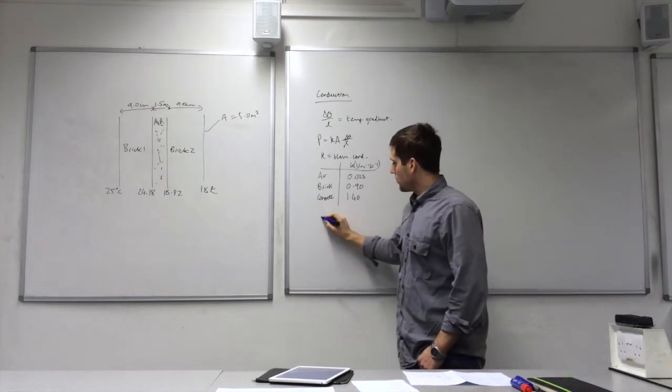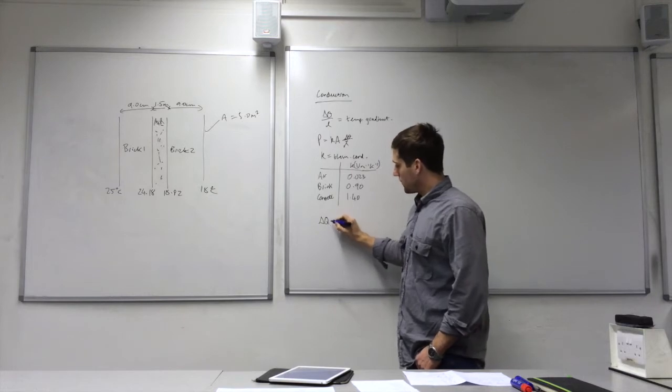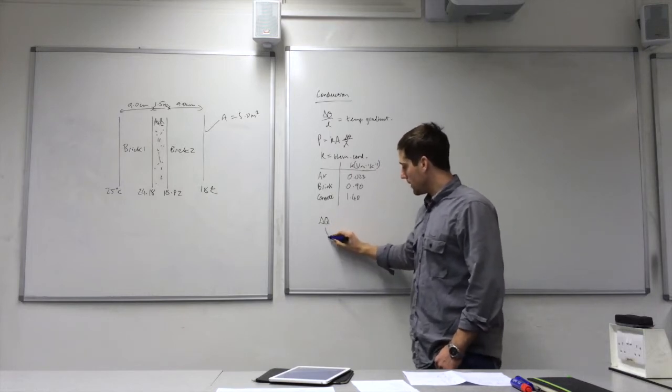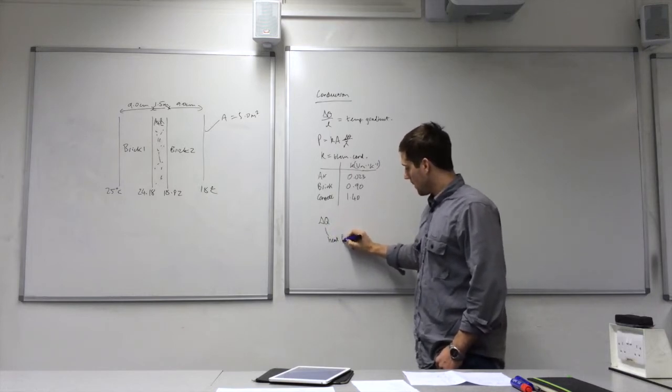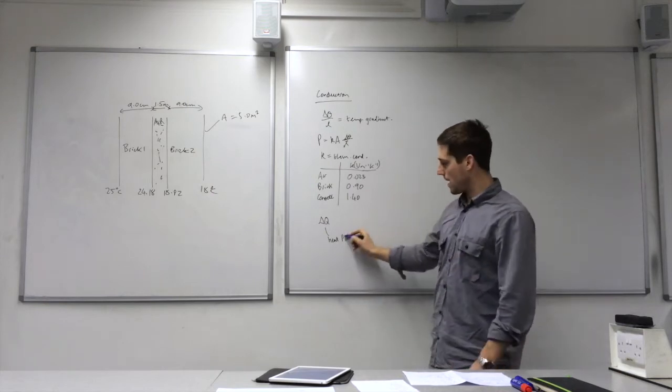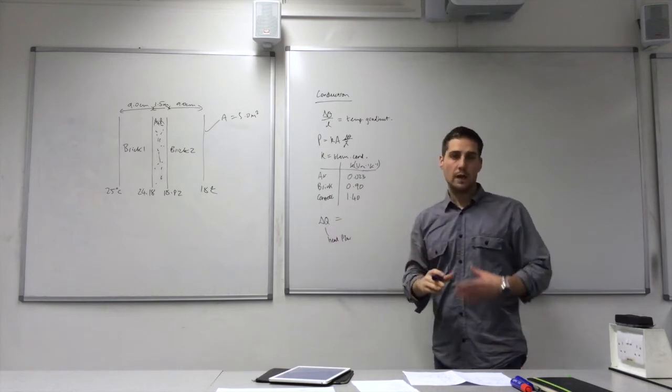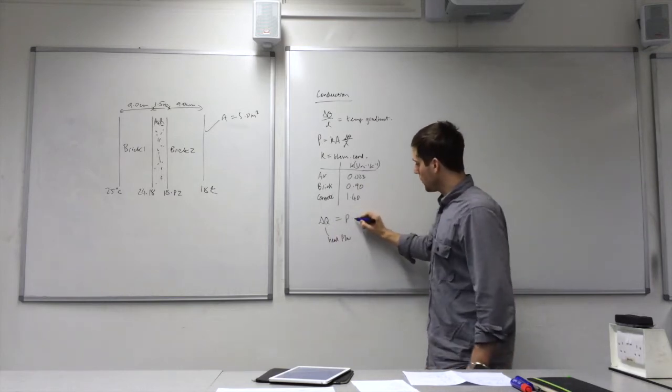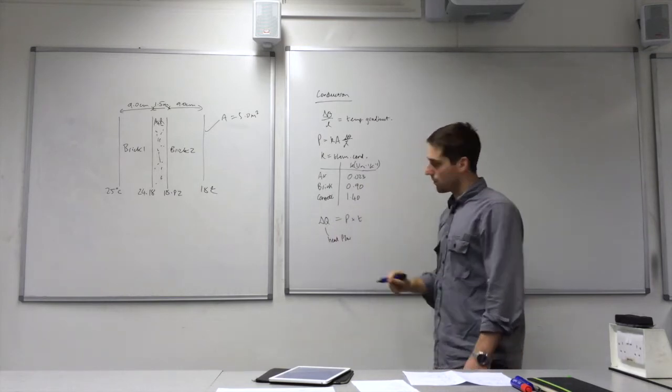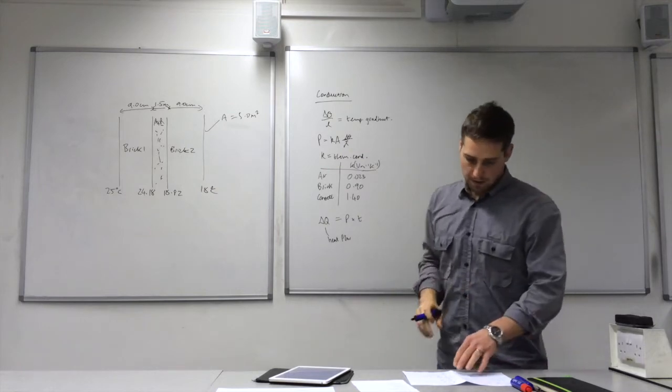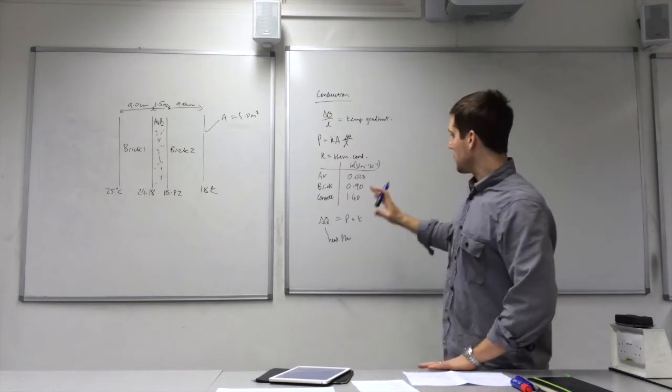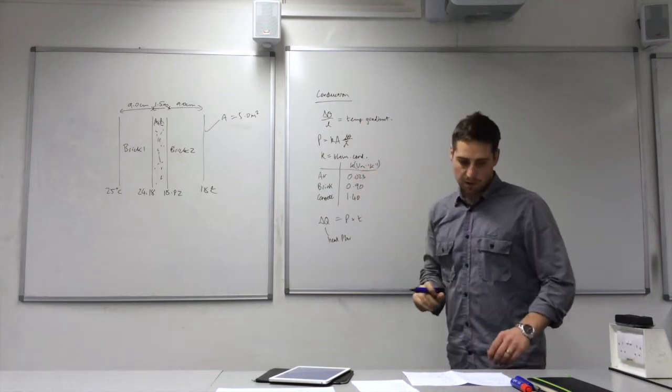Last equation we can use is this. This tells you the heat flow for a given time. So this is how much heat energy is transferred. Q is often used for heat energy. That's equal to the rate of heat flow times the time. Those are the equations, conductivity values.